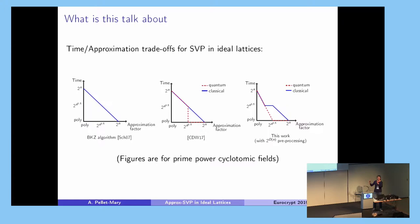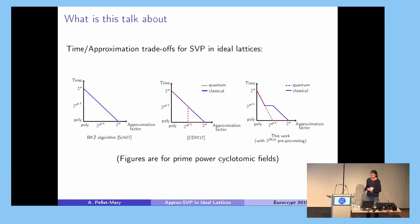Let me show you one picture of this talk. What we are going to discuss is trade-offs between the time and approximation factor we can get for finding short vectors in ideal lattices. I'm going to define everything later — let me just present the big picture.